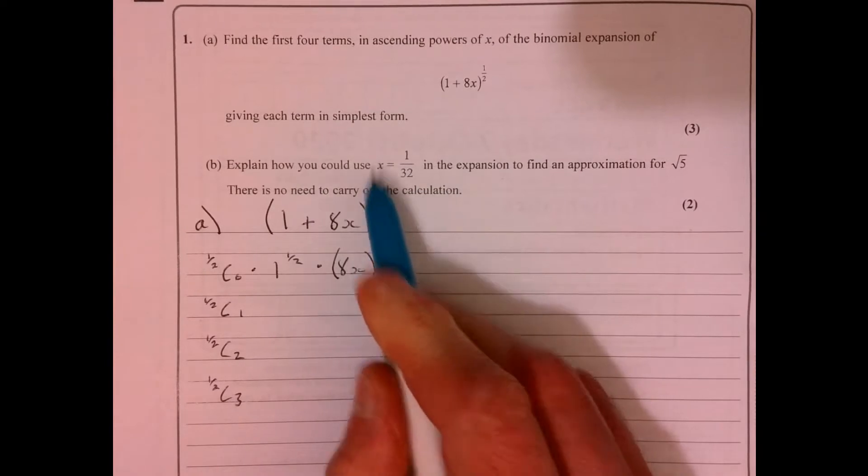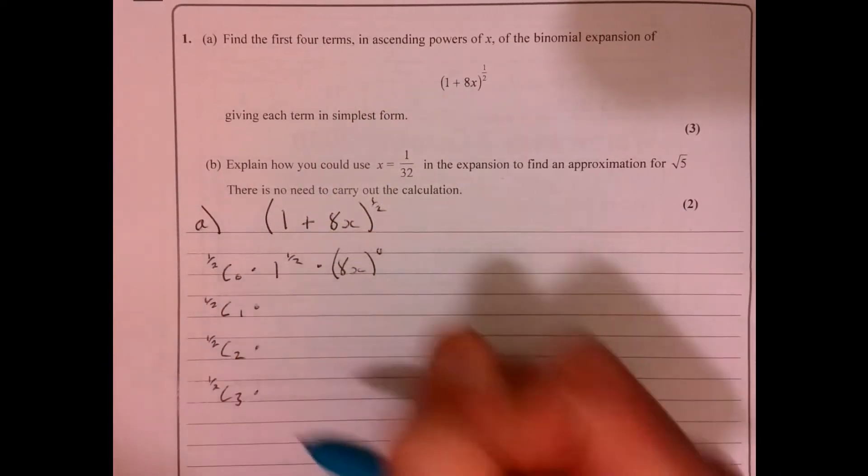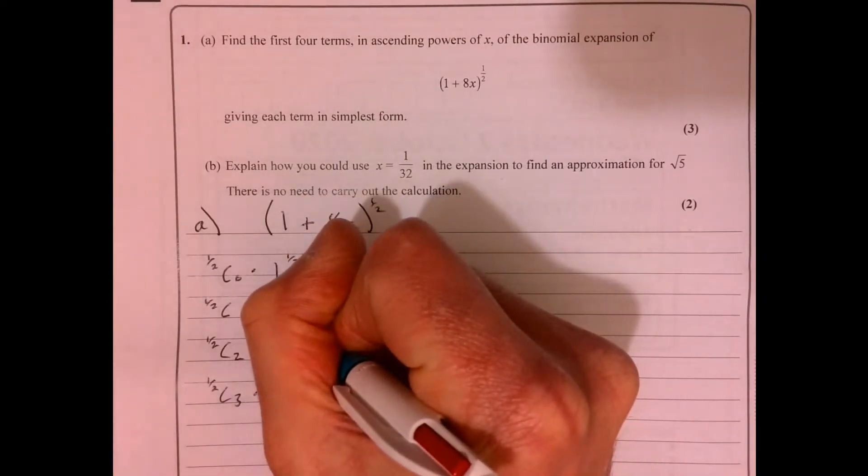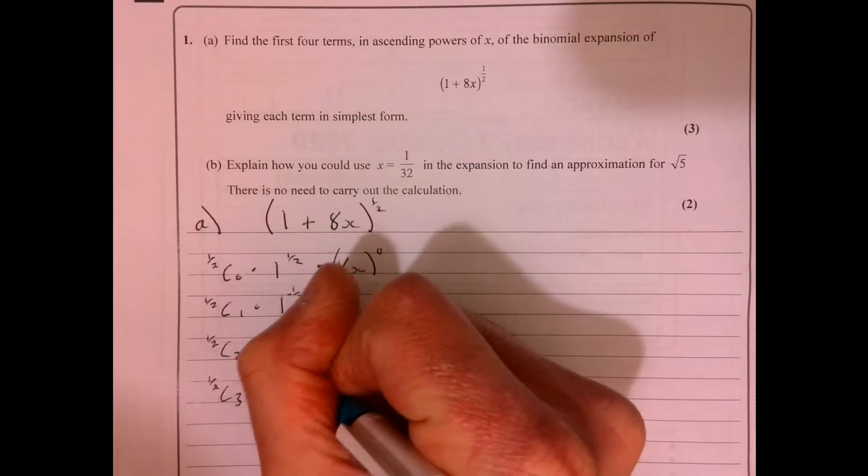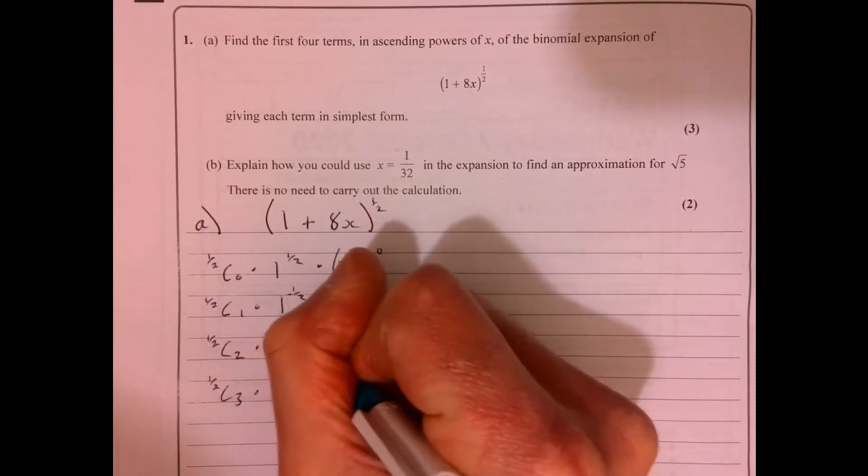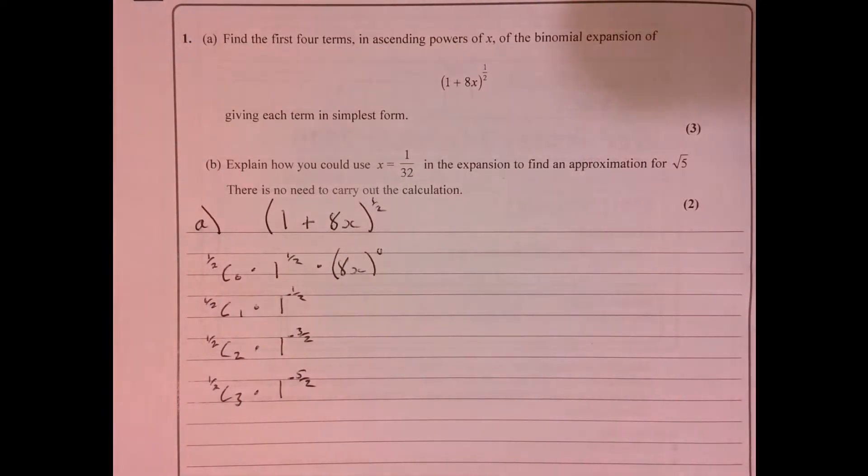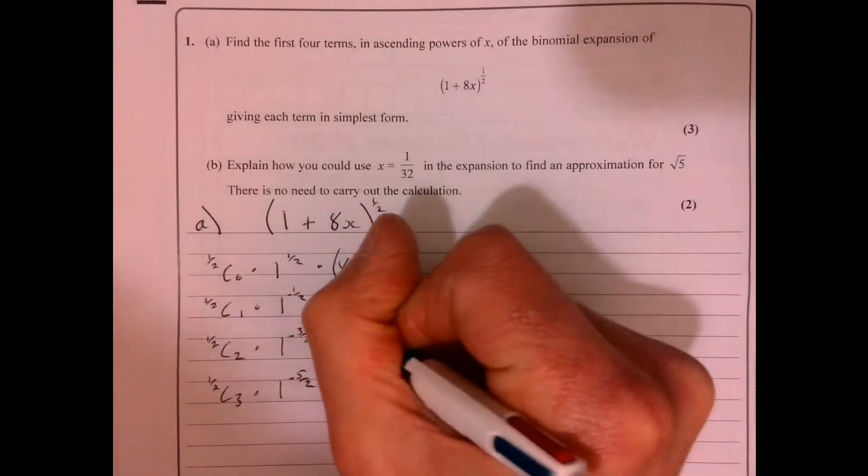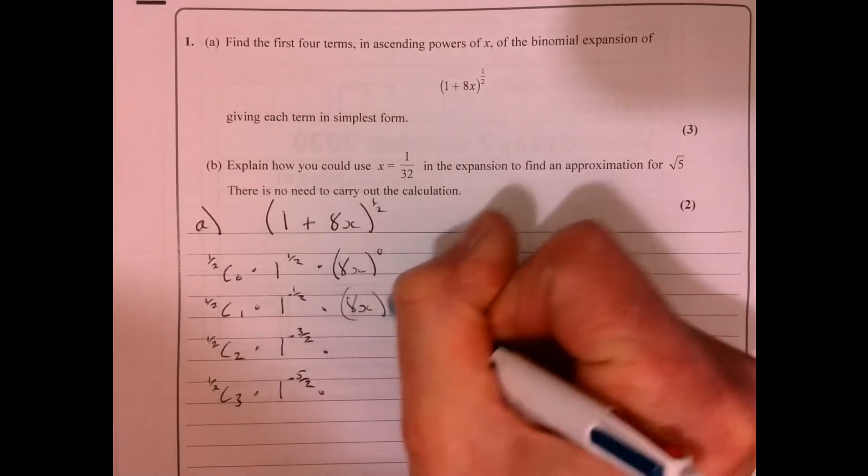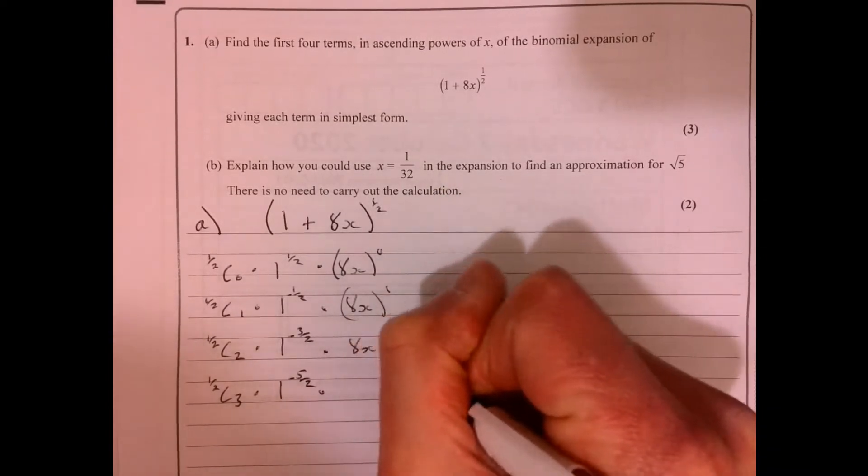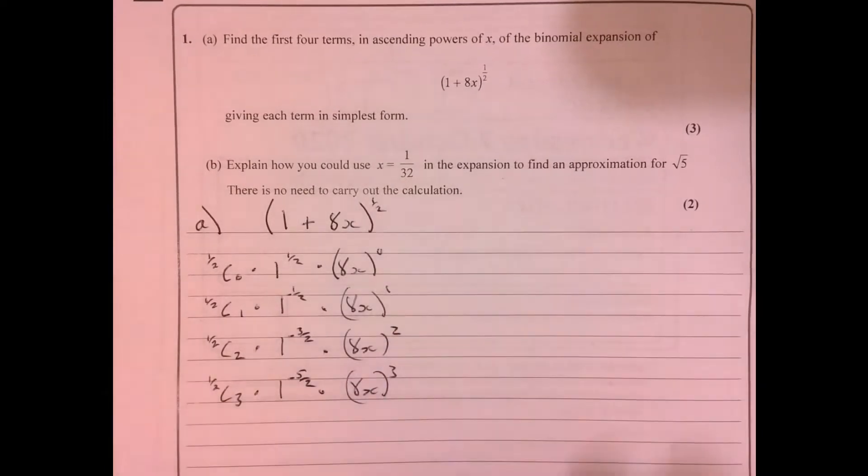It did say the first four terms. And then we're just going to apply those up. So just write everything out. Don't try and actually solve anything. Don't try and work anything out. Just write them down. And then if we just write the others down, so then that would be 8x to the 1, 8x to the 2, 8x to the 3.